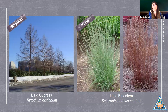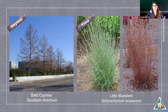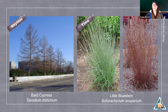Rhythm involves the use of recurring elements to direct the eye through the image. The line of bald cypress trees has a very dominant vertical trunk that pulls your eye along the street. Time is considered in the landscape by changes in the appearance of a plant over the course of a growing season or its entire lifetime. The photo representing this element shows the same clump of little bluestem: one photo taken in summer and the other in fall. The form and size remained the same, while the color and texture changed over time.